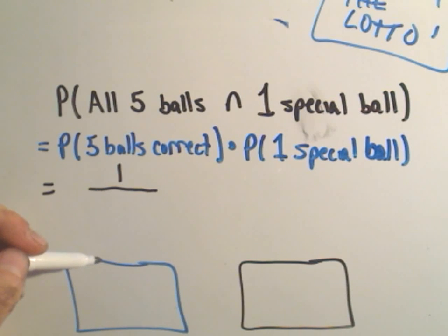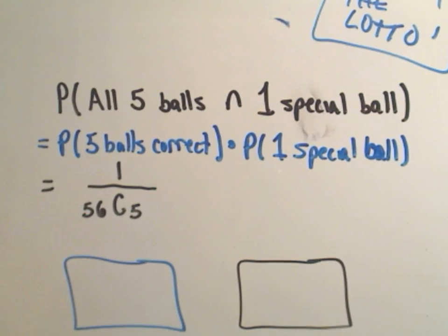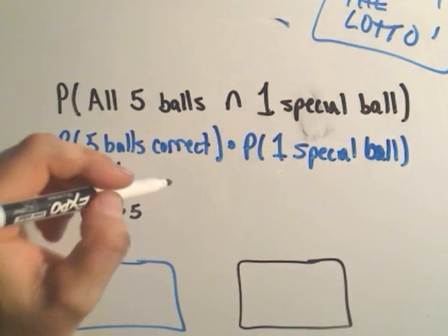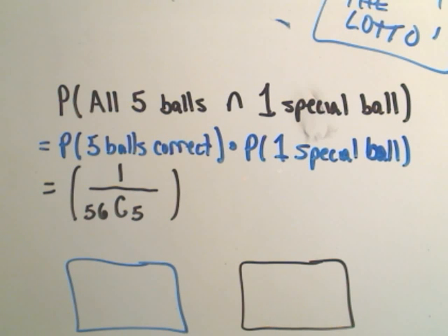Since we're counting without replacement and order doesn't matter, this is where we use combinations. So there was a total of 56 balls, and we have to choose five of those. So that'll be the probability of us picking the five balls correctly.